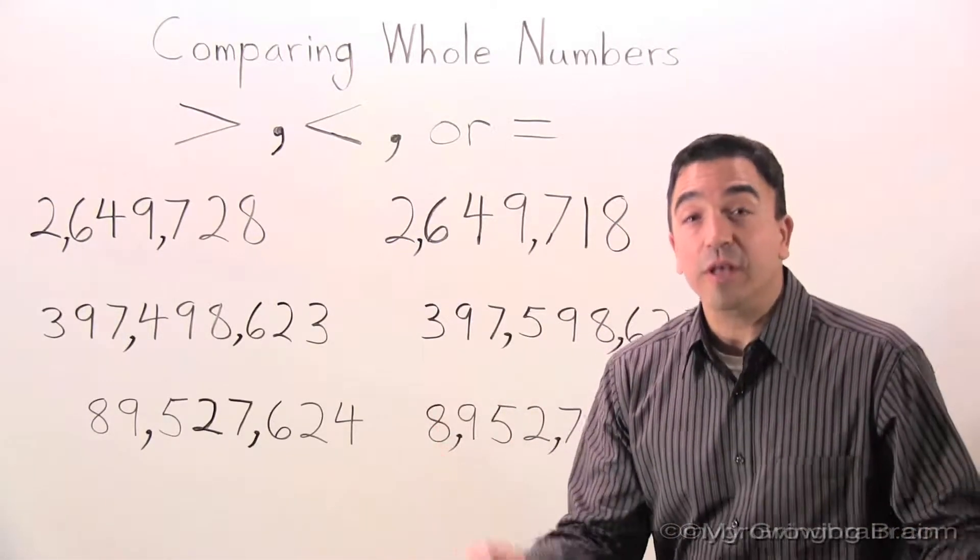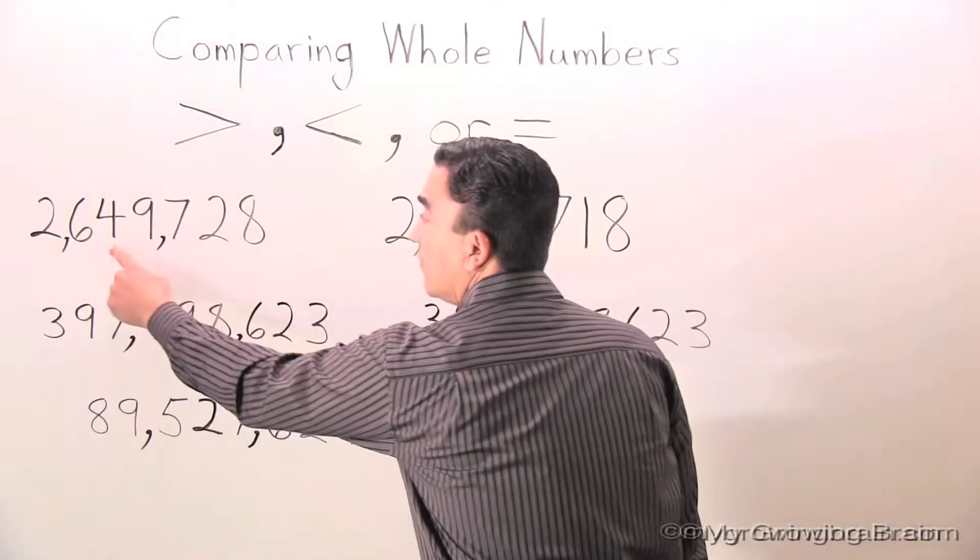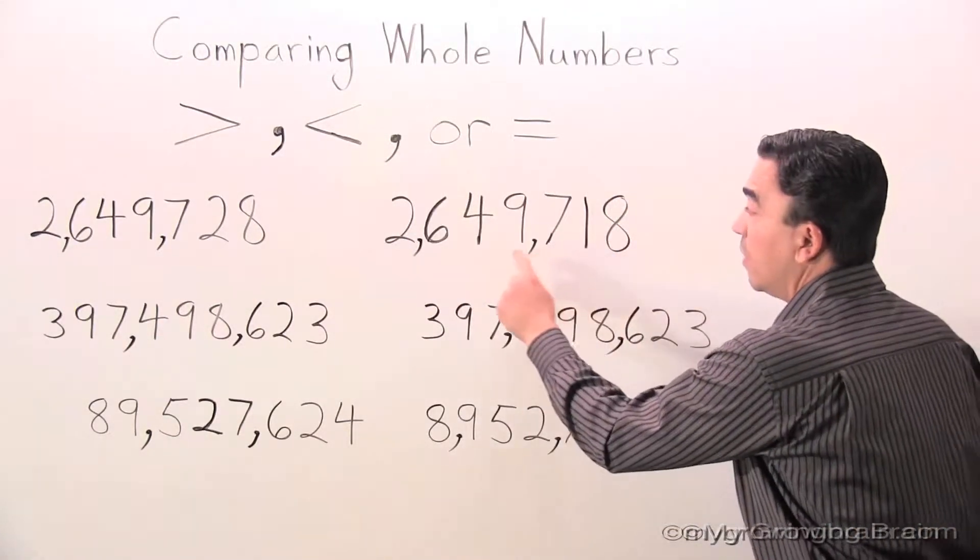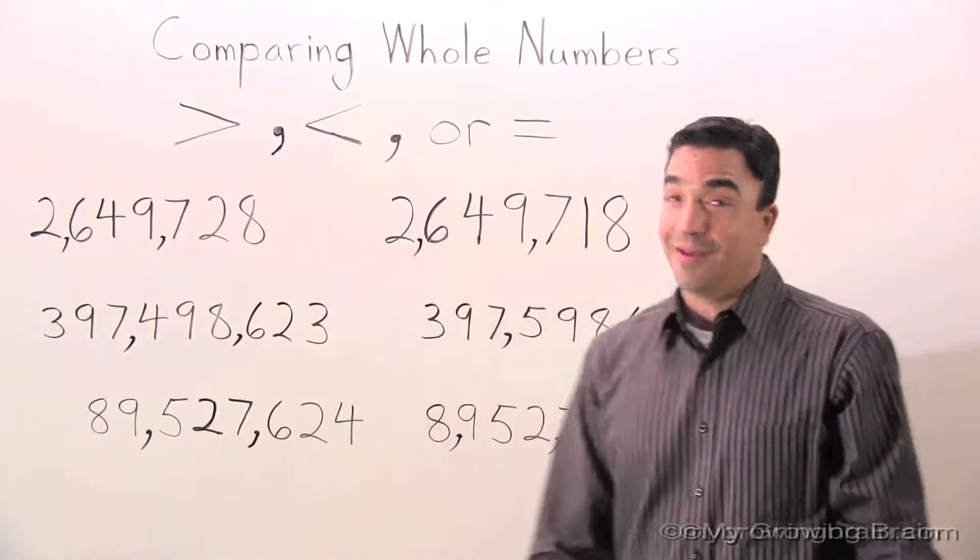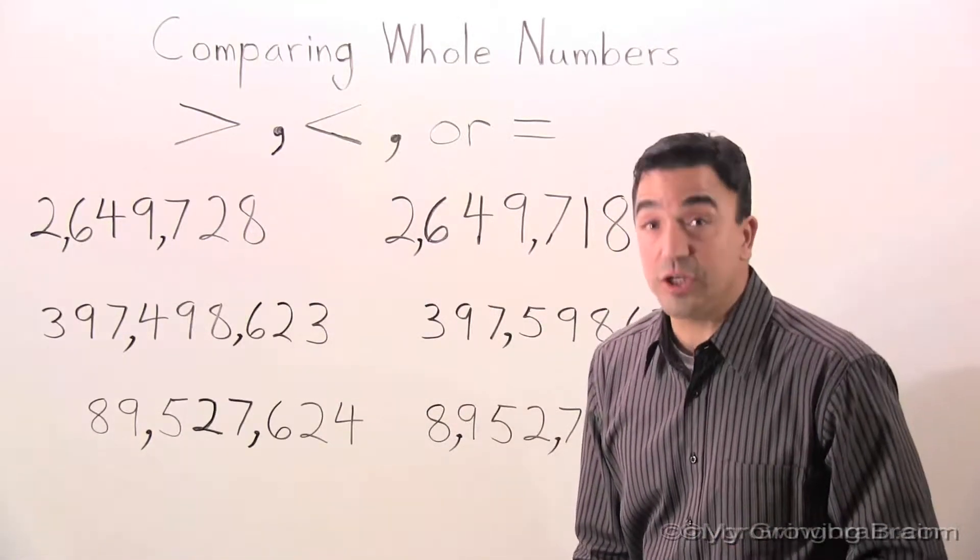Well, the first thing I'm going to do is count the digits. 1, 2, 3, 4, 5, 6, 7. 1, 2, 3, 4, 5, 6, 7. All right. We're dealing with two numbers with the same number of digits.